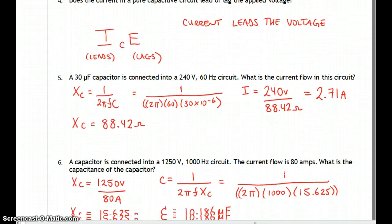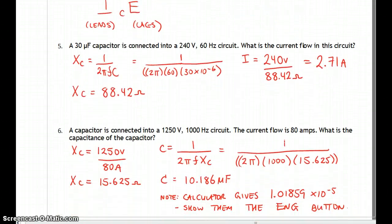Okay, number five, a 30 microfarad capacitor is connected to 240V, 60 hertz, and we're trying to find the current flow. So this is just simply Ohm's law. We have 240 volts, and we need to find the reactance in the circuit if we have that one capacitor there.